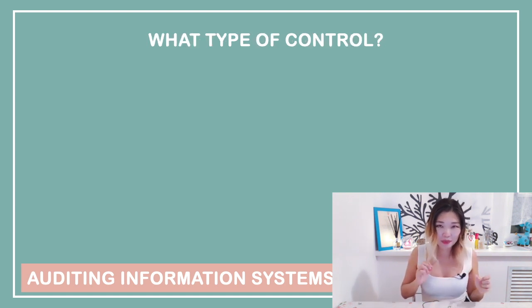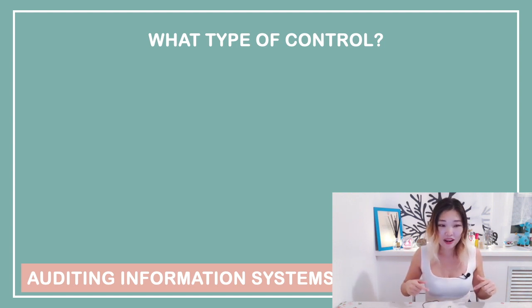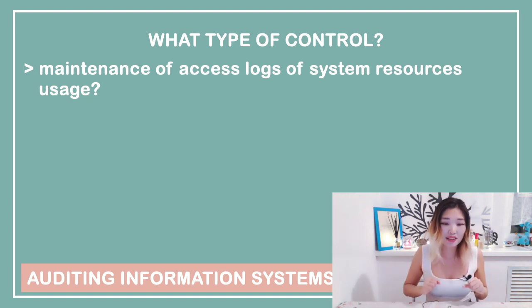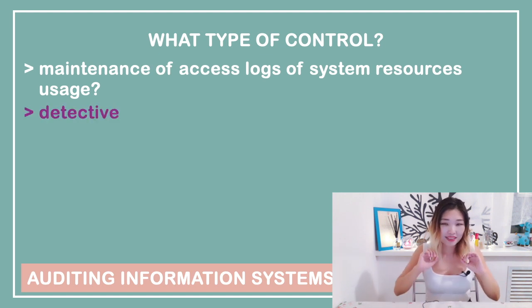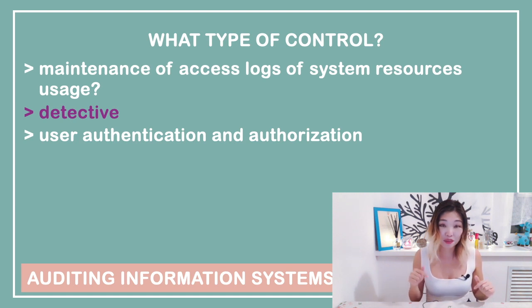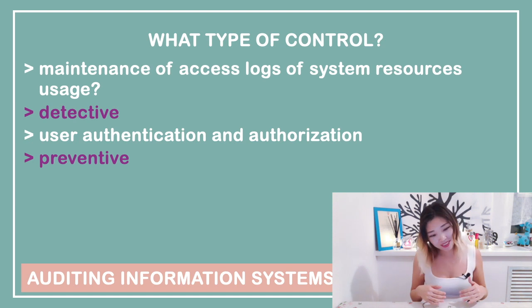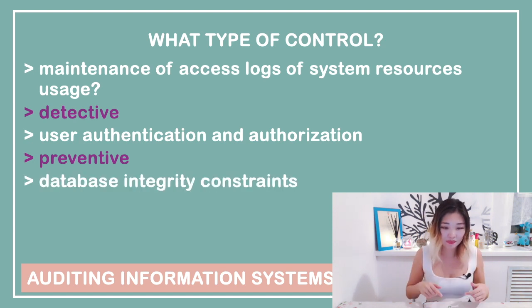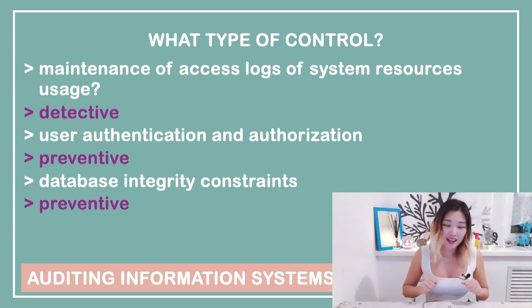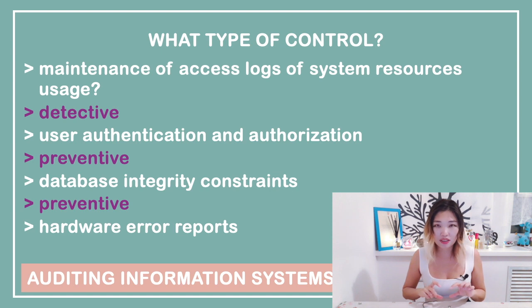I've prepared a small quiz: I'll give you a description of a control and you can guess the type. First: maintenance of access logs of system resource usage — that is a detective control. Second: user authentication and authorization — that is a preventive control. Third: database integrity constraints — also a preventive control. Fourth: hardware error reports — that is a corrective control.